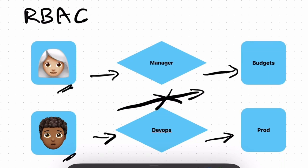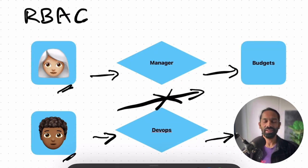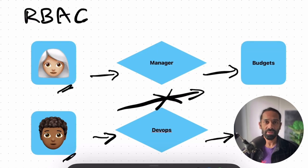The advantage of RBAC is it's easy to understand and manage, especially in small organizations where roles don't change much. It's also very efficient — you're assigning permissions once to a role and any new user in that role gets the same access. But it's not perfect. RBAC can get a little rigid as organizations grow. If someone doesn't fit into a single role, say they're working across departments, you might have to create custom roles or add exceptions, which at scale can become increasingly messy.